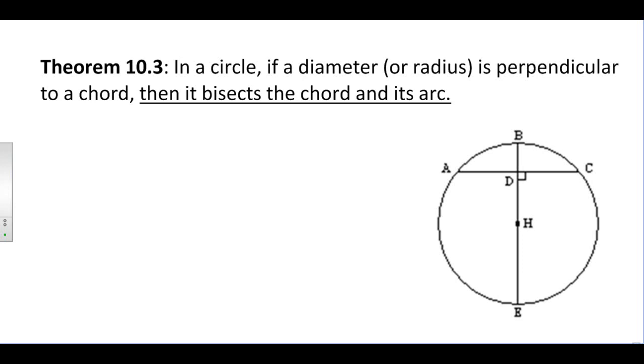So in this picture, if we have a diameter, in this case that's diameter BE, and it is perpendicular to chord AC, notice it makes a right angle here. If that's the case, this diameter here is going to do two different things. The first thing it's going to do is bisect the chord. So segment AD and segment DC are going to have to be congruent to each other.